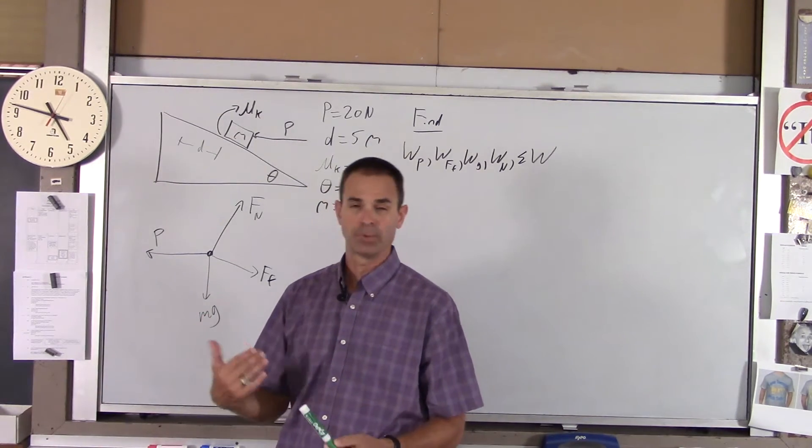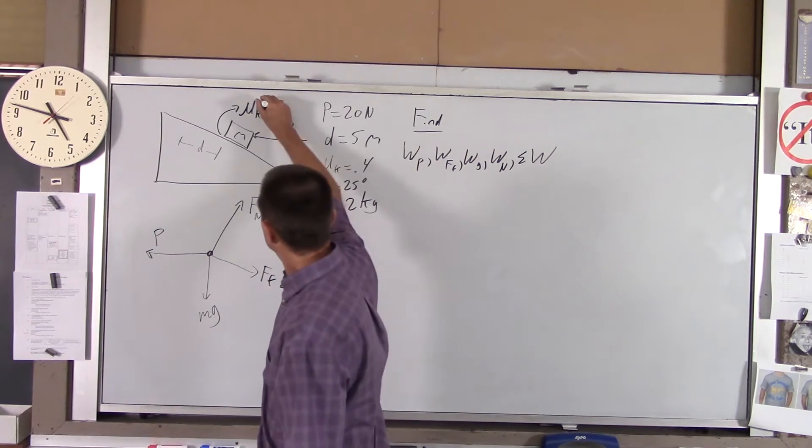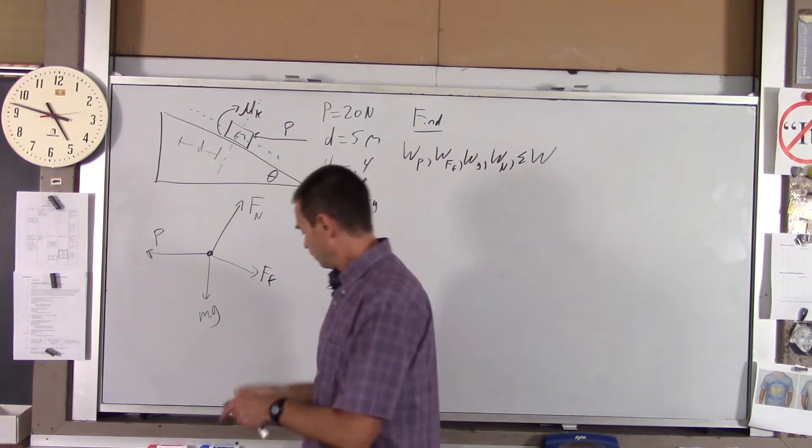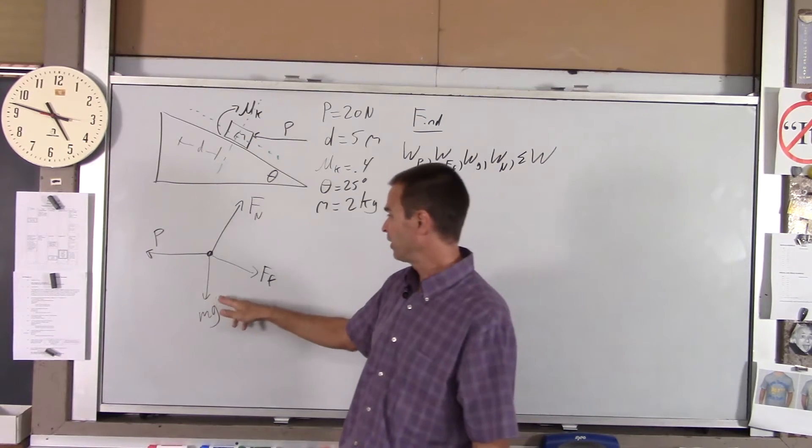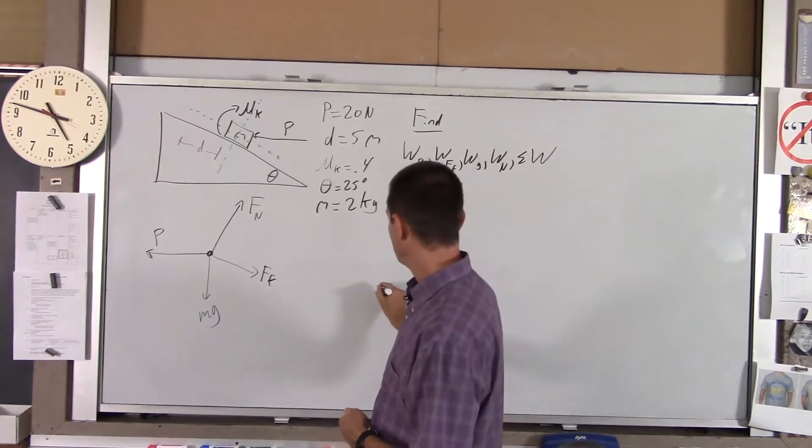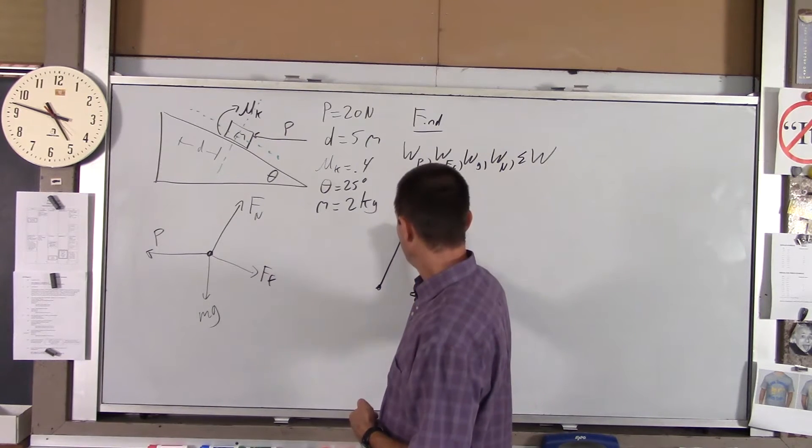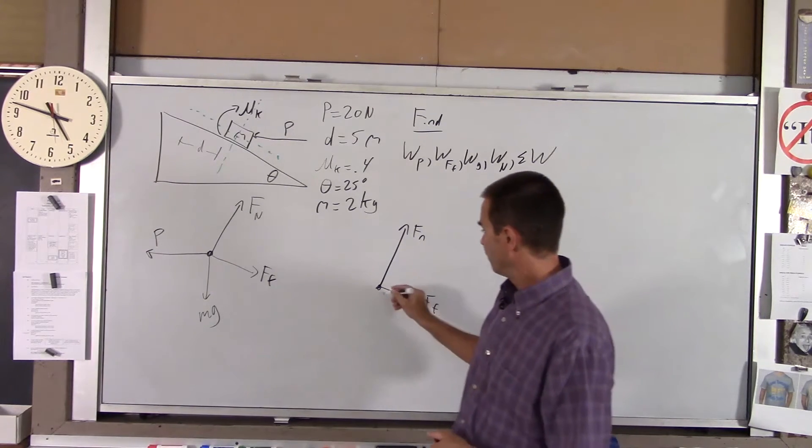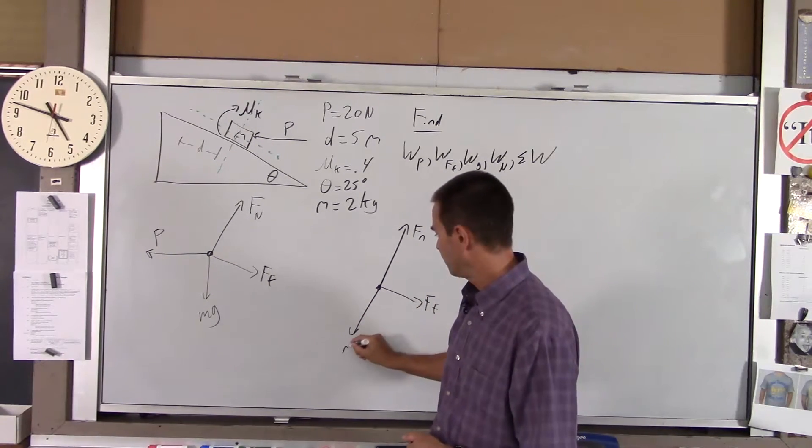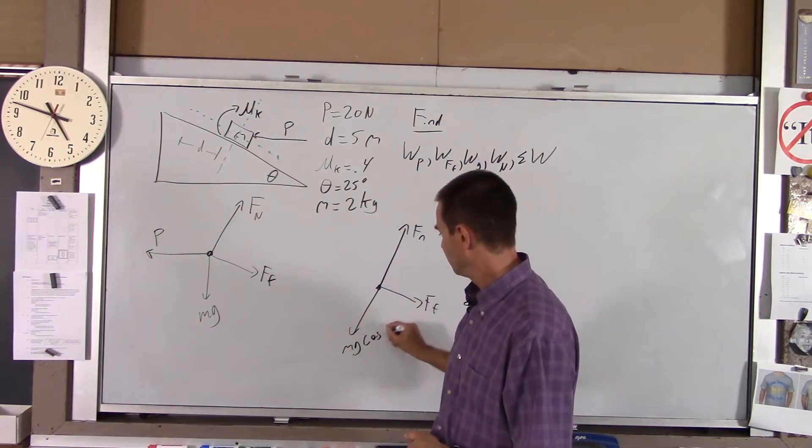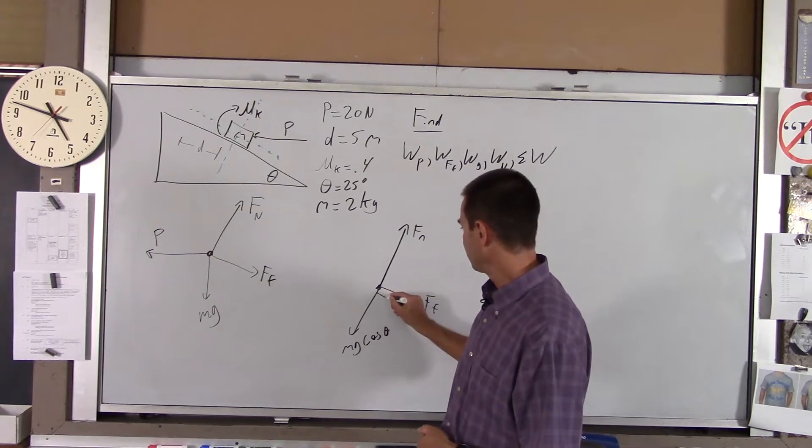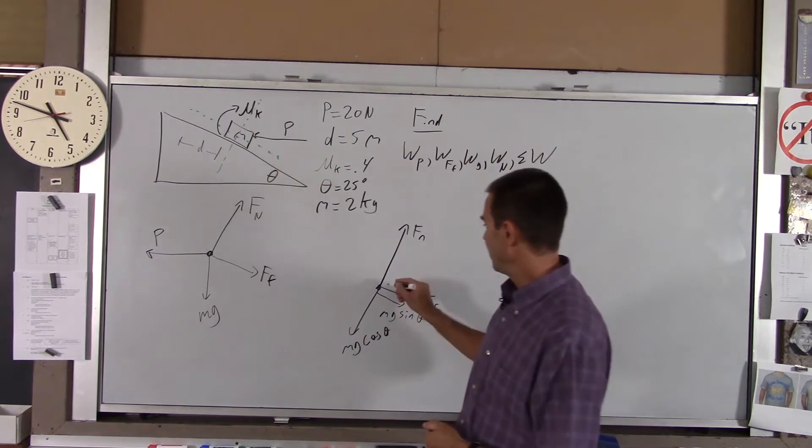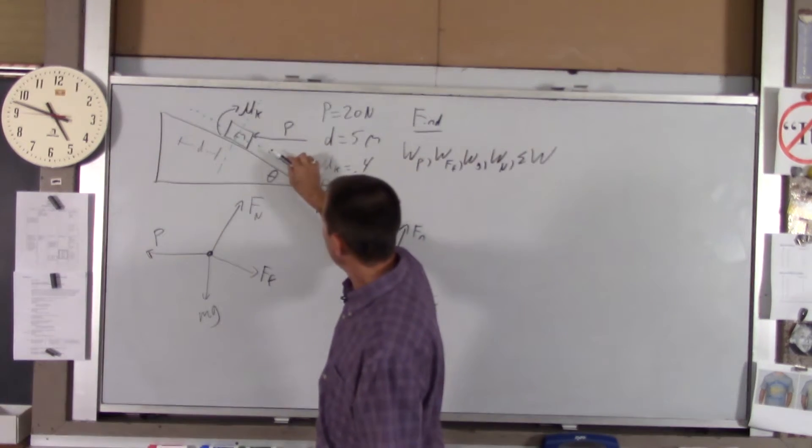There's your four forces. Like with any other problem, we want to split our forces up into two components: parallel to and perpendicular to the motion. For us that's perpendicular and that's parallel. So ff and fn are all good. I gotta split mg and P into components. I'm going to redraw my FBD here. I'll redraw fn, redraw ff.